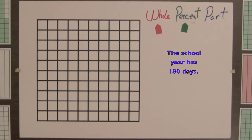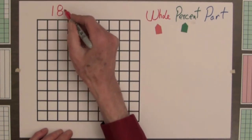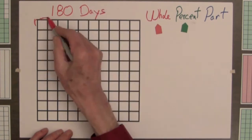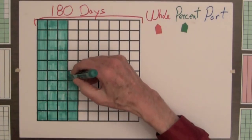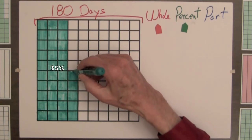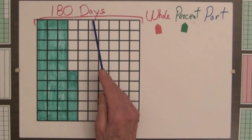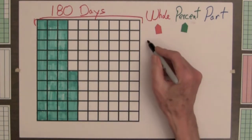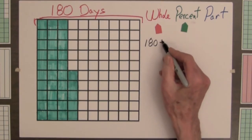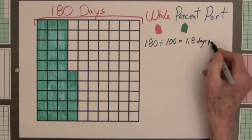The school year has 180 days, and if 35% of these days are left, how many days in the school year are left? The whole square represents 180 days, and we will shade 35 small squares to represent 35%. To find the value of one small square, we spread the 180 days out evenly over the 100 small squares by dividing. 180 divided by 100 equals 1.8 days per square.